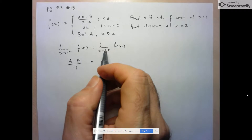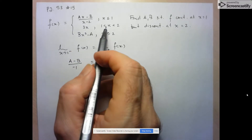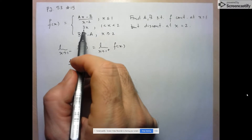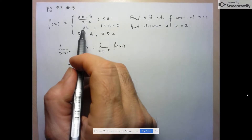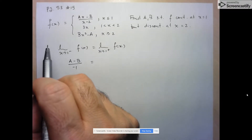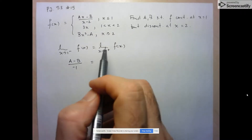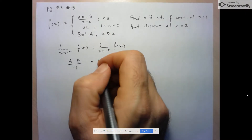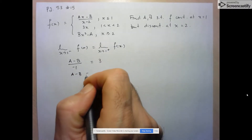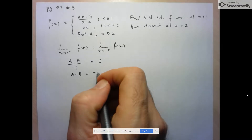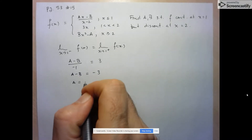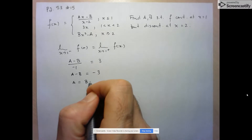That has to equal the limit as X approaches 1 from the right. To the right, F is defined by a linear expression, so no issues finding the limit — I can just input 1. That gives 3 times 1, which is 3. So A minus B has to equal negative 3, or equivalently, A is equal to B minus 3.